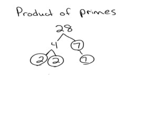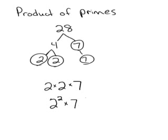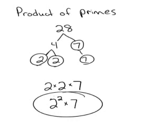So if I want to write it as a product of primes, product means the answer to a multiplication problem. I would want to do it like this. And then of course the shortcut for that would be 2 to the second power times 7. There is the product of primes. Thank you.